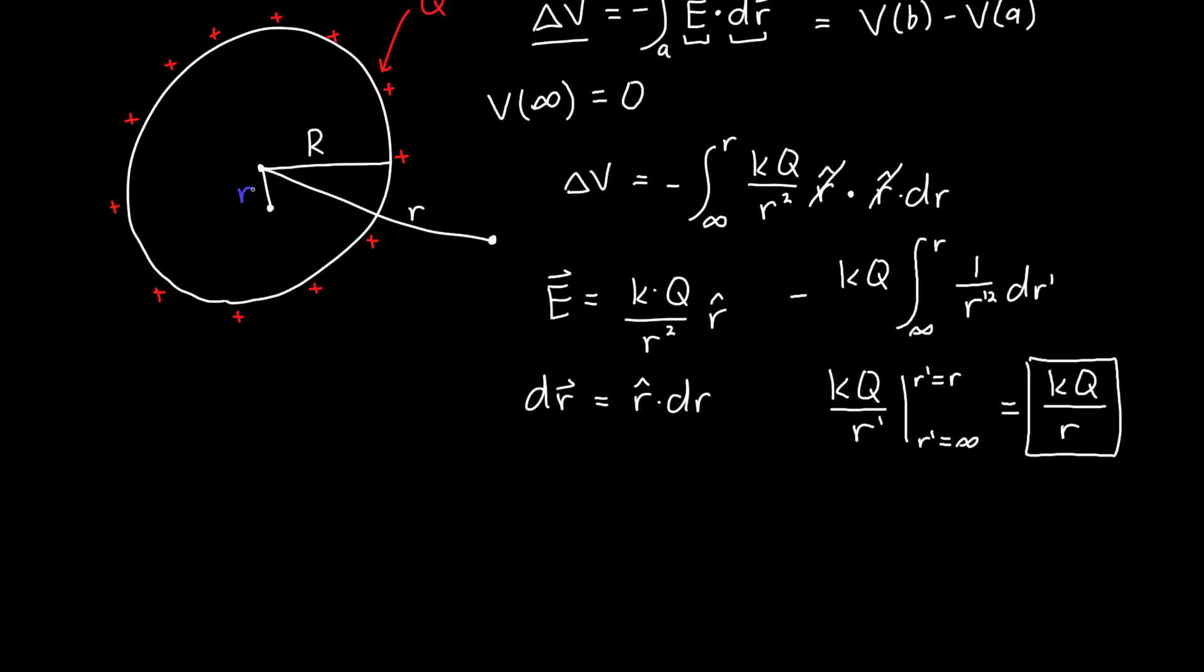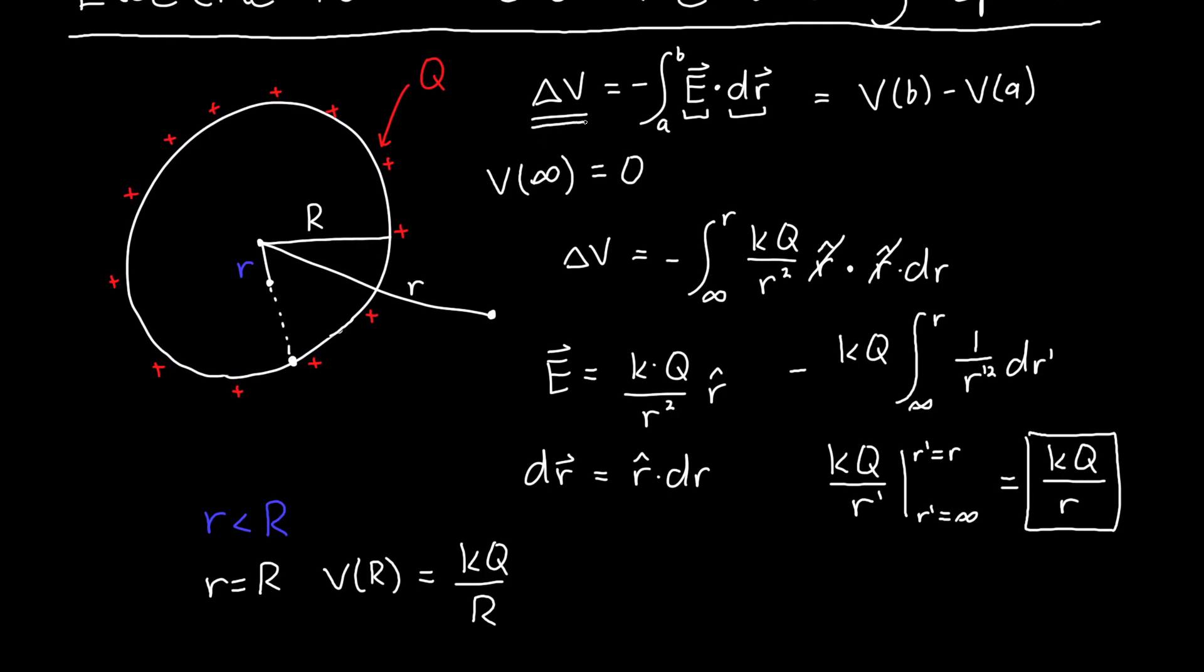But what about inside the sphere? So what if we consider an r that's less than big R? How does the situation change? Well, one thing that we could do is we could figure out what the potential is right at the surface, and then try and figure out what the potential is some distance inward. Or if we're doing this so that we have symmetry, figure it out at some point on the surface, and then figure it out at some distance r. So to figure out what this is on the surface, we just need to plug in little r is equal to big R, and so the potential at the surface is just k q over big R. And now we can use our original equation in terms of delta V and the electric field to figure out what the difference is between some point on the surface and inside.